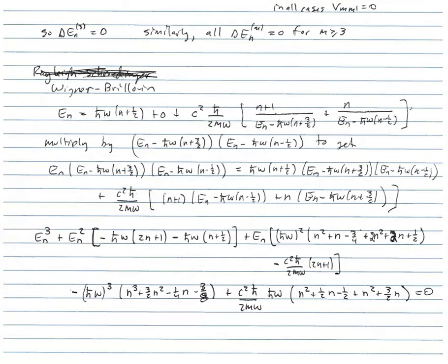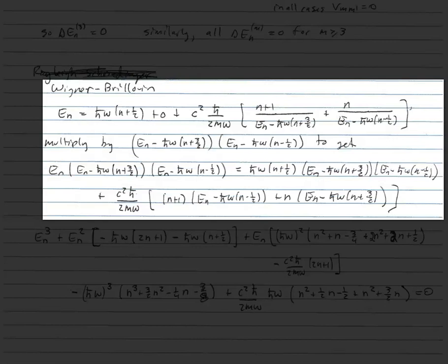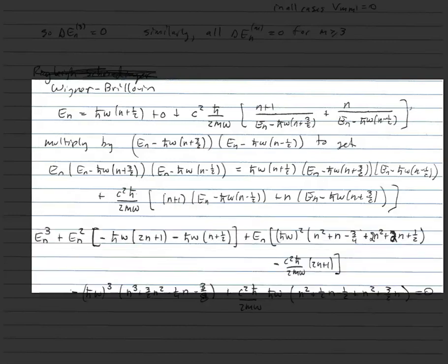How does it work for Wigner-Brillouin? Again, we just have two terms in the second-order contribution, and all higher-order ones are 0. We get En = ℏω(N + ½) + 0 + C²ℏ/2Mω · [(N+1)/(En − ℏω(N + 3/2)) + N/(En − ℏω(N − ½))]. Now En appears on both sides. Multiplying through by the product of both denominators gives a cubic equation on the left-hand side, and we have to go through the algebra.